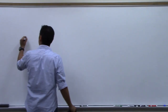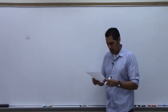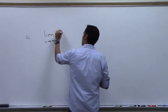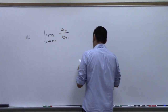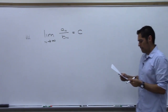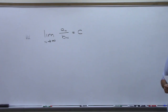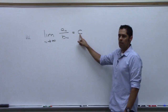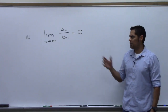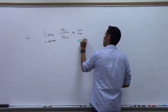Part three of the comparison test is the same idea — you pick a series you know what it does. But instead of doing inequalities, you take the limit as n goes to infinity of a_sub_n over b_sub_n, and you hope that limit exists and equals a number c. This must be a positive real number — infinity does not count.